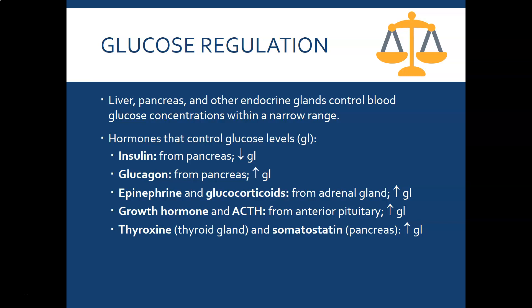The liver, pancreas, and other endocrine glands control blood glucose concentrations and try to keep it within a narrow range. The two most important hormones are insulin and glucagon. Insulin is produced by the pancreas and its goal is to lower blood glucose levels. It kicks in after a meal, especially a carbohydrate-heavy one, when glucose spikes in the blood. Insulin favors the production of glycogen and shunts glucose into cells.